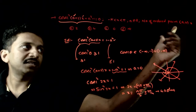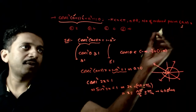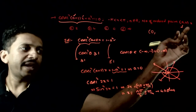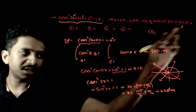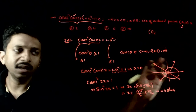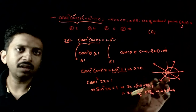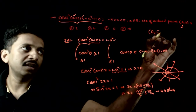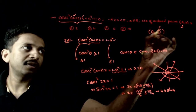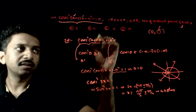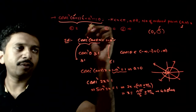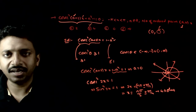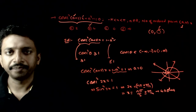How many ordered pairs (a, x) are possible? Since a has to be equal to zero and there are 4 possible values for x, there are 4 possible ordered pairs. So option B is the right answer to this question. Thank you.